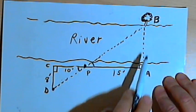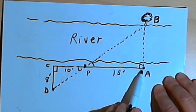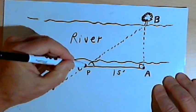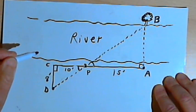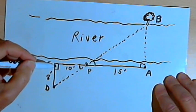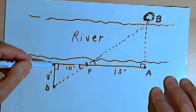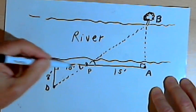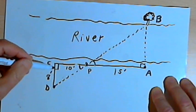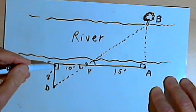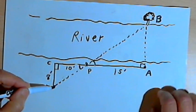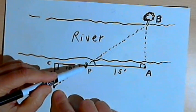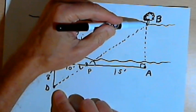To find the distance across the river, you turn 90 degrees and walk along the length of the river 15 feet. After 15 feet you put some marker down, which we'll call point P, and then continue walking 10 feet more, down to point C. Now you turn 90 degrees again, away from the river, walk 8 feet to point D. And you notice that there's a direct line from point D through point P over to point B, where the tree is.